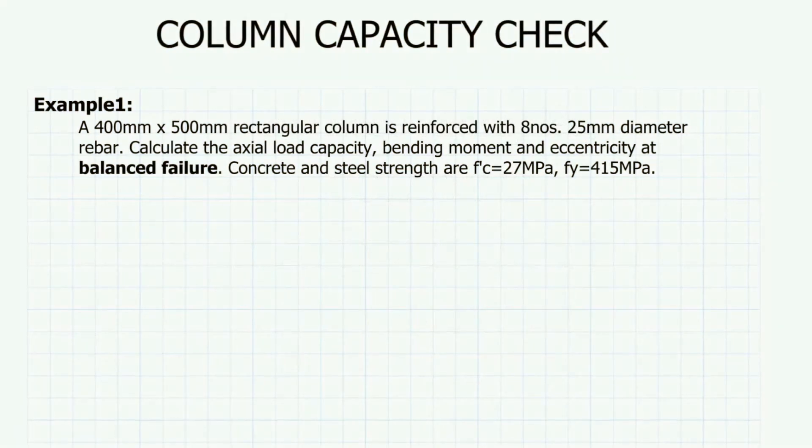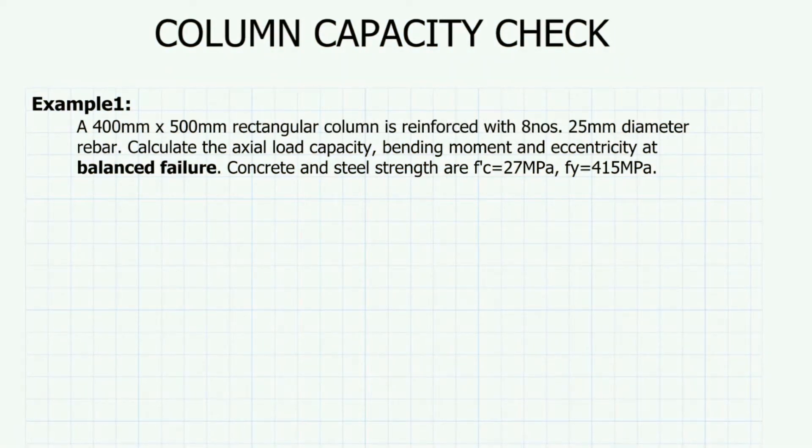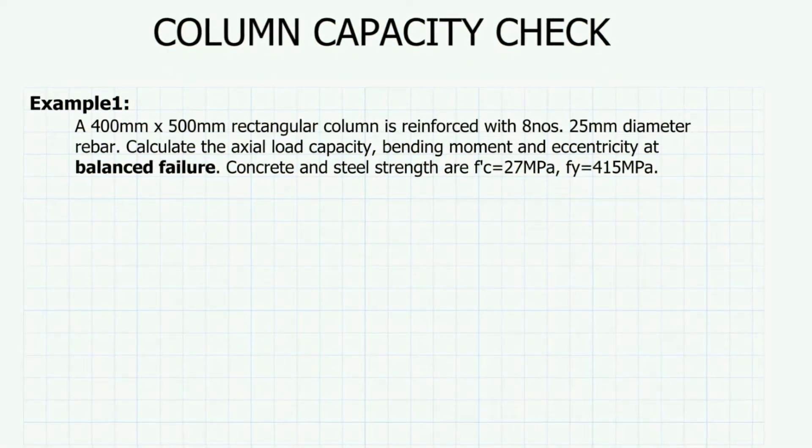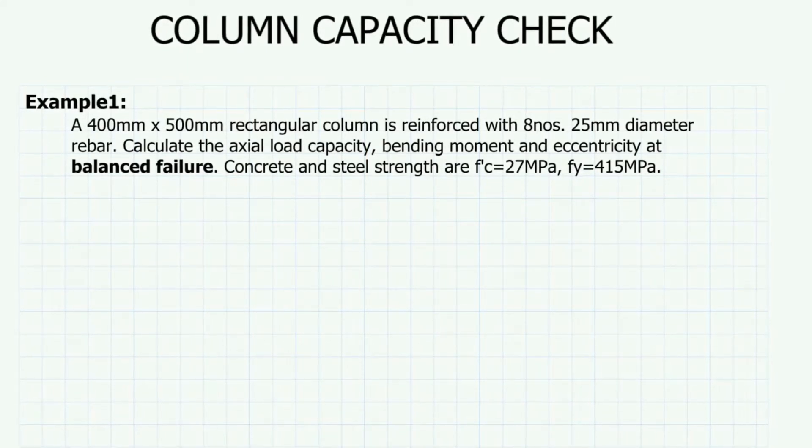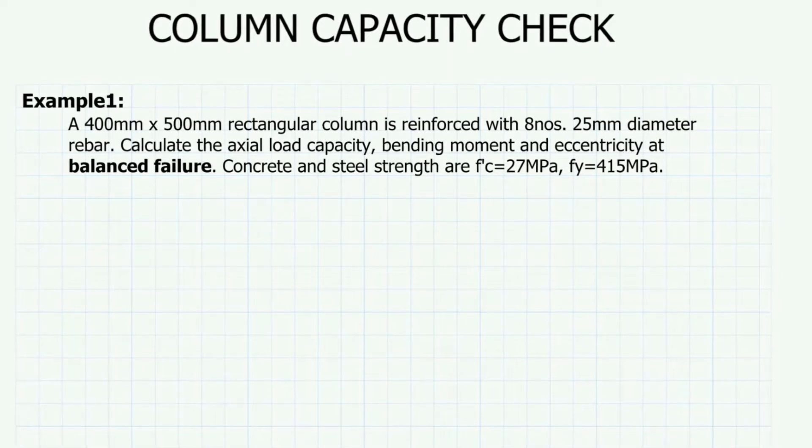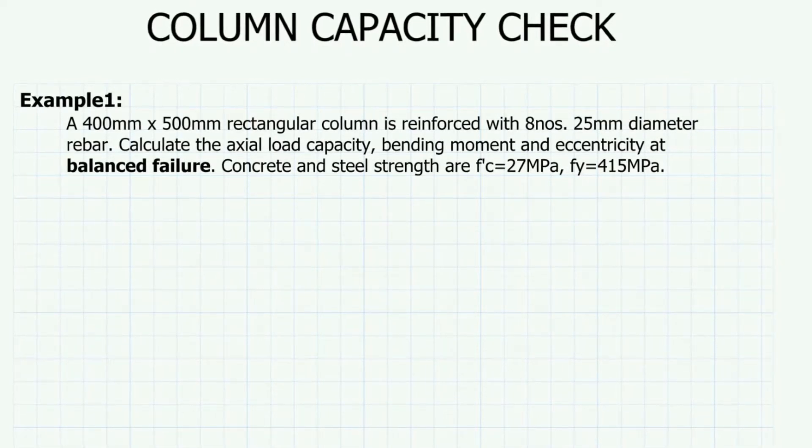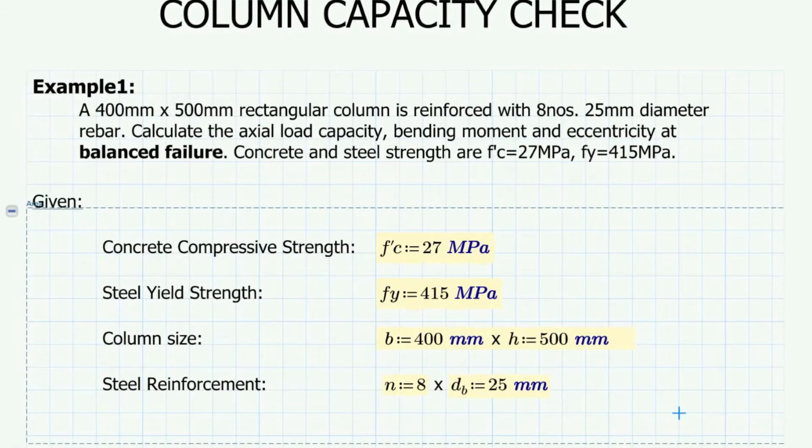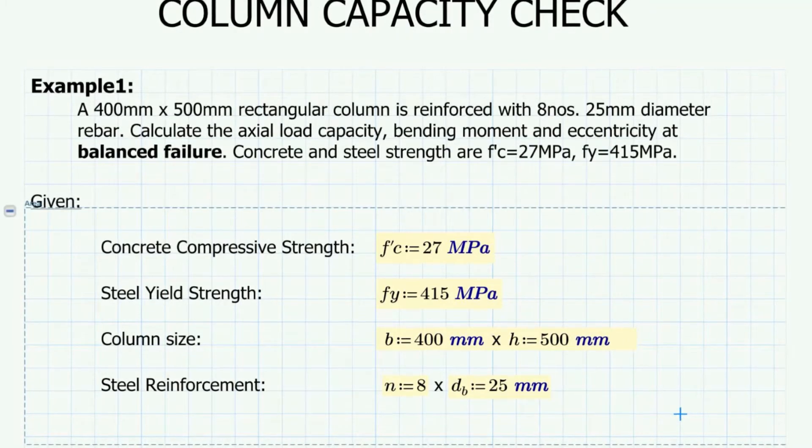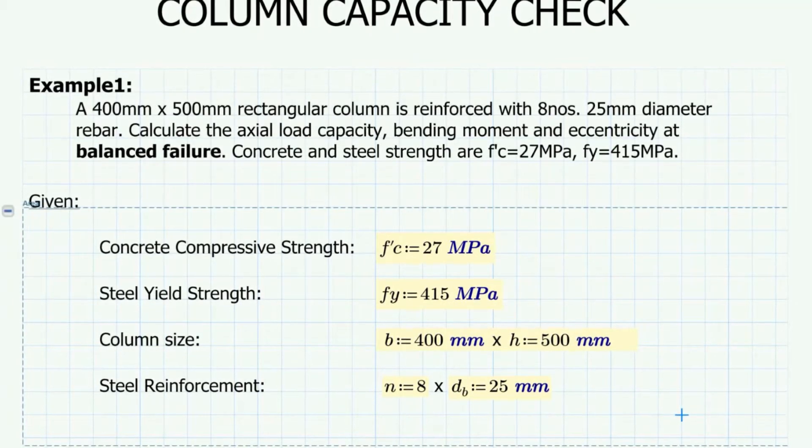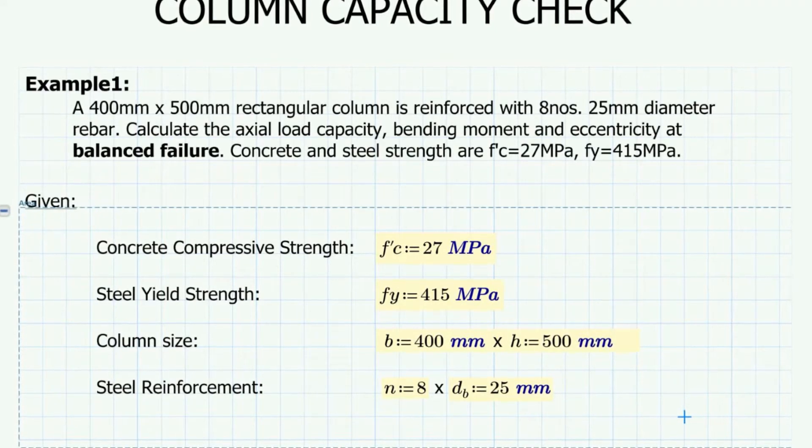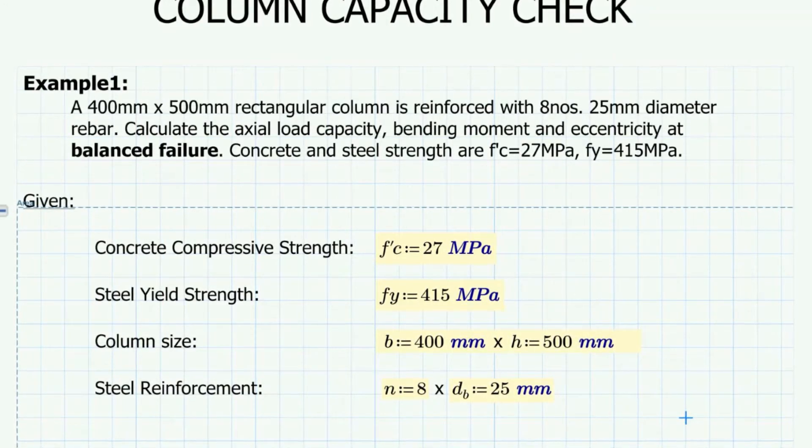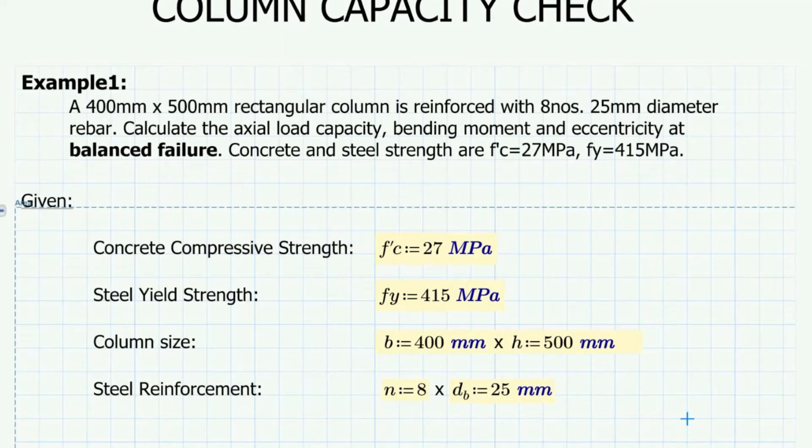Let's say, for example, we need to find out the actual compressive strength of a column, the bending moment, and its corresponding eccentricity at balanced failure. Balanced failure is when the concrete and steel fail at the same time. For this example, we have a 400 by 500 mm column, which is reinforced with 8 numbers of 25 mm diameter bar with 27 MPa concrete strength and 415 MPa steel strength.